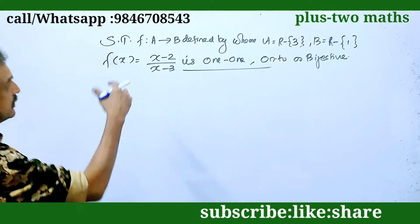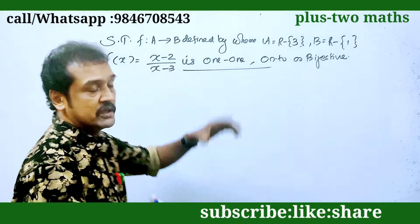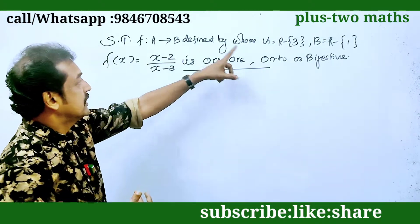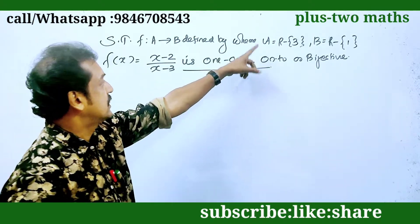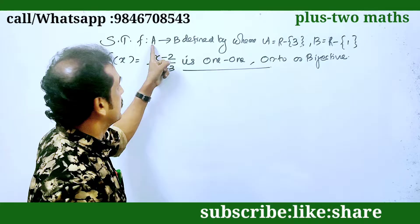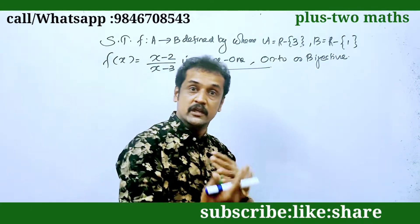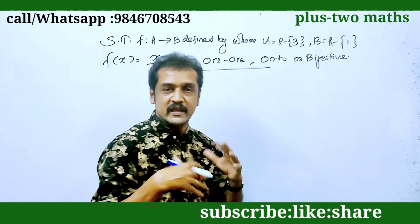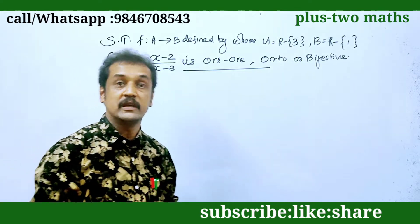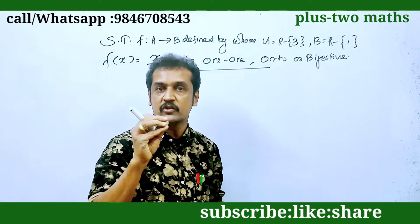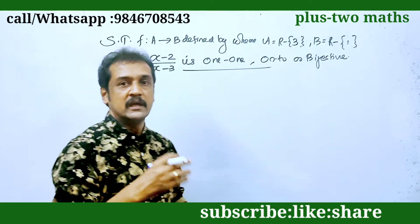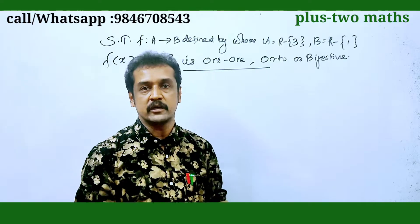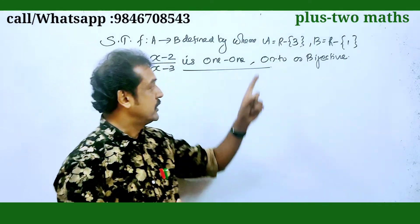Let's show that f from A to B defined by f of x. This is the first thing that we call R to R, or N to N. This is A to B. This is the fractions — we call it a fraction.